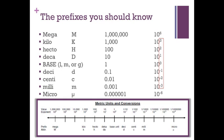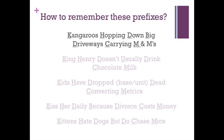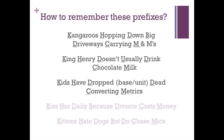If you are not familiar with these prefixes, they can be tricky to keep track of, so mnemonics are often helpful. The first letter of each unit size makes the first letter of each word. Here are a few different ones so you can pick which one will help you remember the most. Kangaroos hopping down big driveways carrying M&Ms, well that's a funny sight. King Henry doesn't usually drink chocolate milk. Kids have drop-dead converting metrics, probably so. Kiss her daily because divorce costs money, or at least it can't hurt. And kittens hate dogs but do chase mice. Pick whichever one works best for you and go with it.